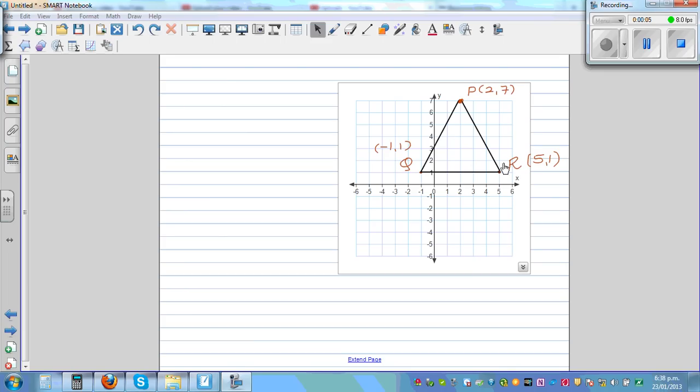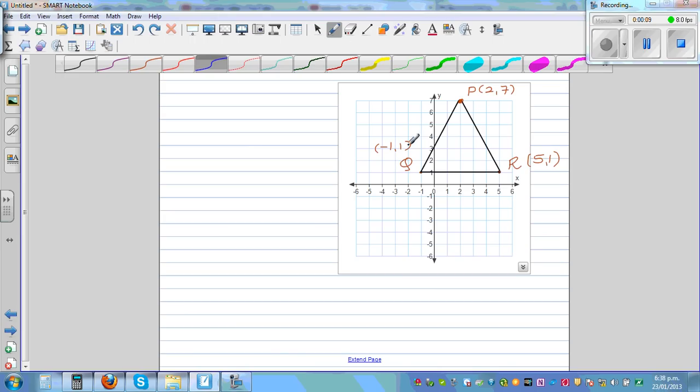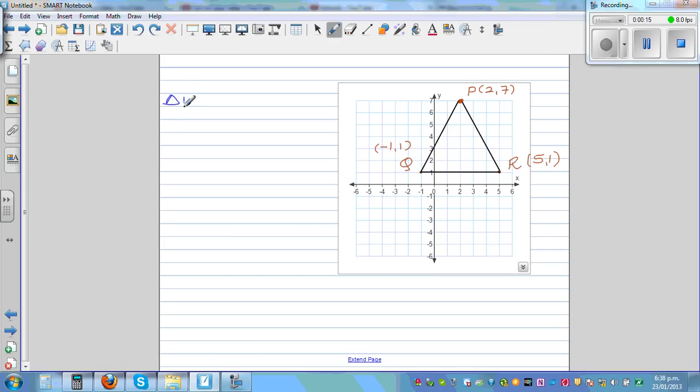This is triangle PQR with the coordinates 2 comma 7, negative 1 comma 1, and 5 comma 1. We want to prove that this triangle PQR is an isosceles triangle.